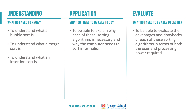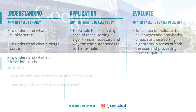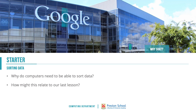As part of today's lesson we're going to be looking at three sorting algorithms: a bubble sort, a merge sort, and an insertion sort. We need to know what they are and give a basic overview of how each one works. We're then going to think about the advantages and disadvantages of each one. Think about why computers need to sort data and how that relates to last lesson, particularly around the requirements for a binary search.